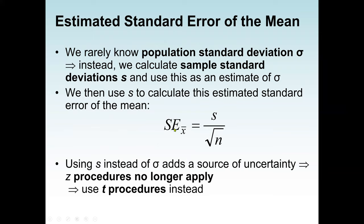In our prior lectures — Units 8, 9, and 10 — we relied on the Z-test, the Z-statistics procedure, to help infer the population mean. The Z-procedure relies on knowing the value of the population standard deviation before data are collected. With the Z-procedure, the population standard deviation is used to calculate the standard error of the mean using the formula: population standard deviation over square root of sample size.